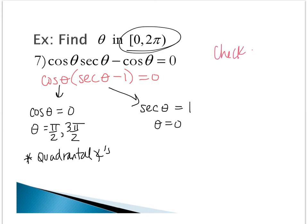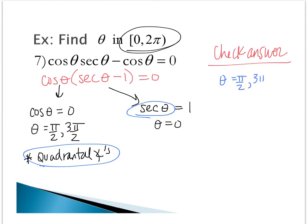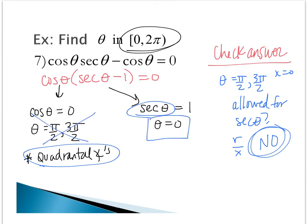If we finish for secant, when does secant theta equal 1? This happens at theta equals 0. Now we want to check these answers. We have secant and we have quadrantal angle answers. Is theta equaling pi halves and 3 pi halves allowed for secant? Since secant is r over x, and at these two angles x equals 0, the answer is no. Even though they work for cosine, they do not work for secant. Therefore, the only answer that this problem has is 0 radians.